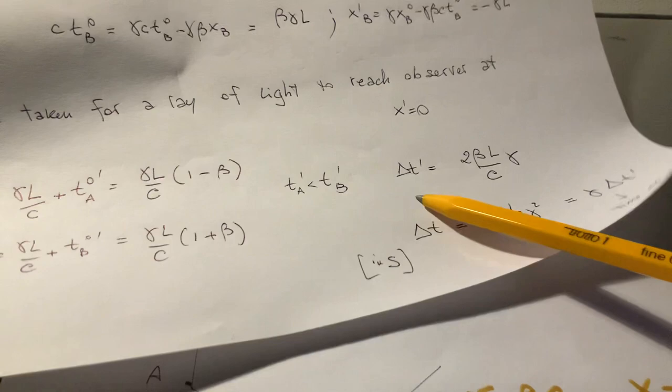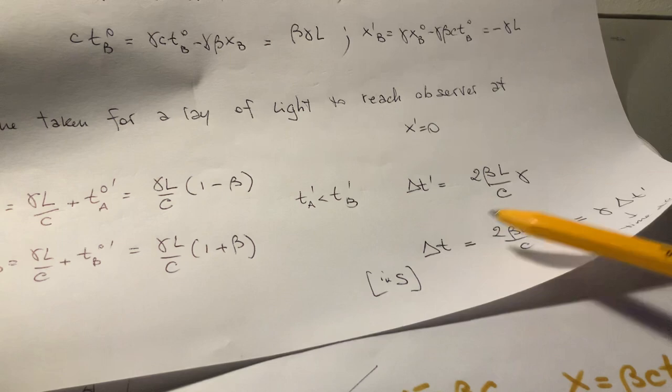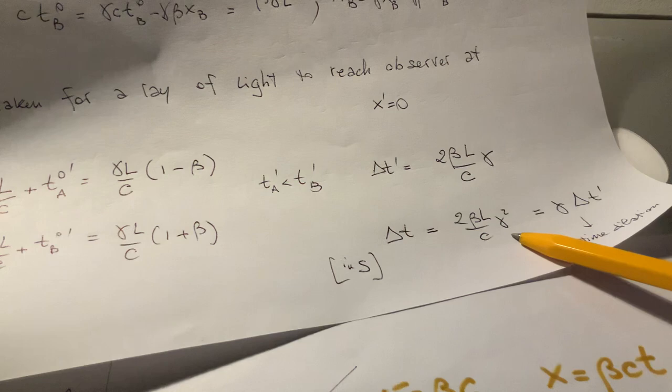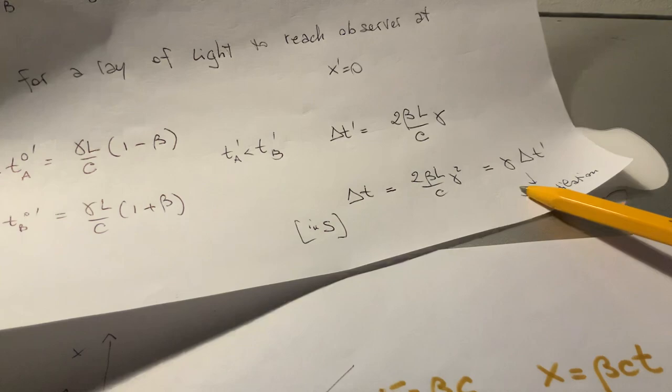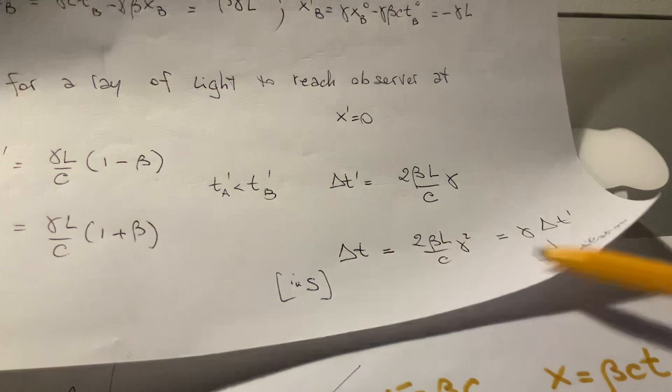But the time difference between the two events, getting light from A and from B, if you make the difference between these two, is 2 beta L divided by c times gamma. Whereas in the observer, in the stationary frame, the delta T, the difference between the two events, was the same one multiplied by gamma. And this is what is called the time dilation, or the twin paradox or whatever. So time runs differently between two frames. And the factor between the two is exactly this gamma factor, which is what I was mentioning before.